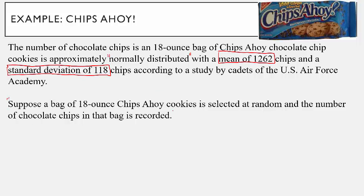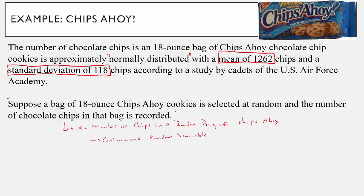Suppose you go into the grocery store and grab a random 18-ounce bag of Chips Ahoy chocolate chip cookies and record the number of chocolate chips in it. I'm going to let X equal the number of chips in a random bag of Chips Ahoy. Since we're told it's normally distributed, we're going to treat this as a continuous random variable — there could be half a chip, or 1,001 chips, so it's not strictly discrete.